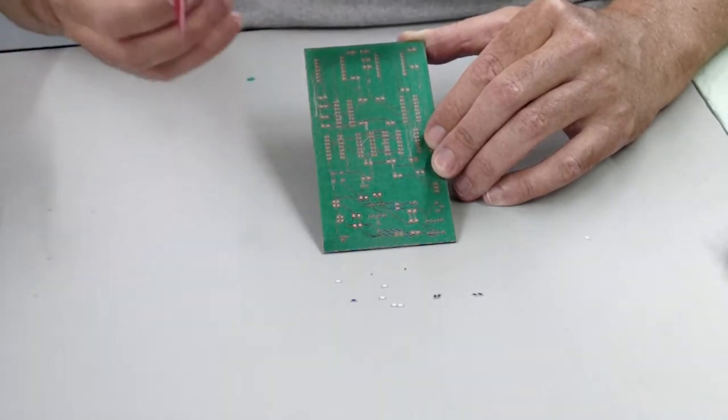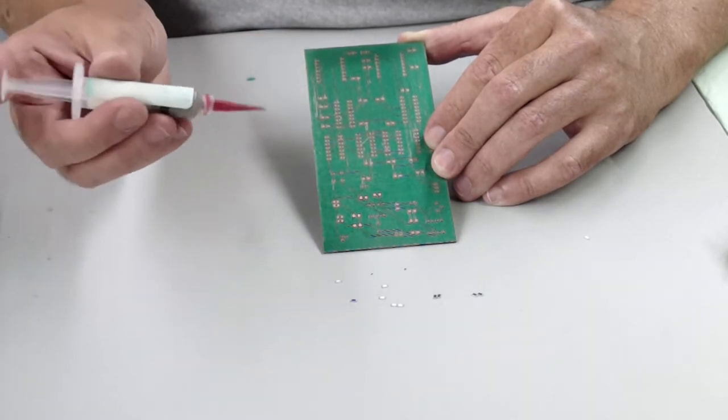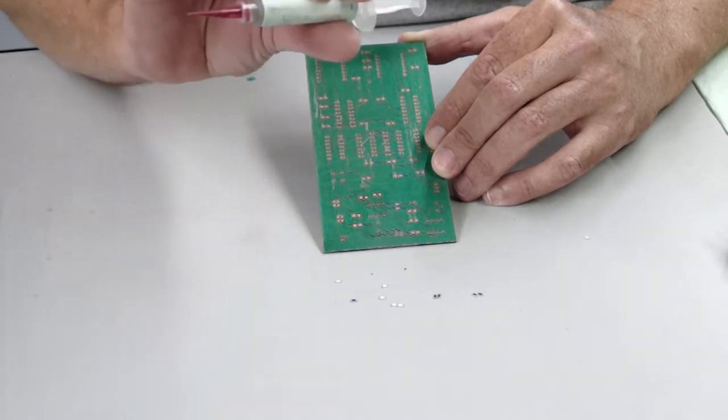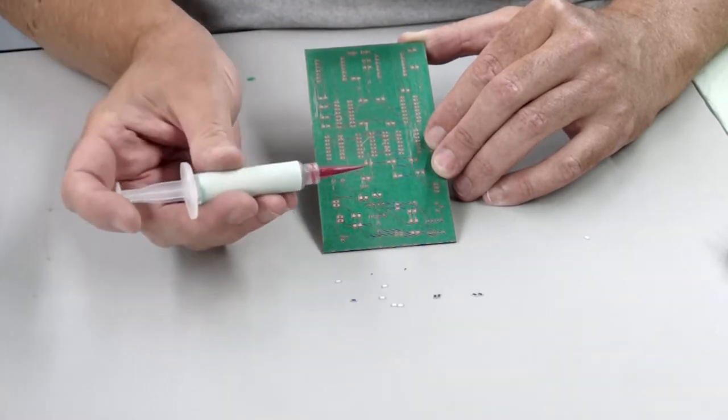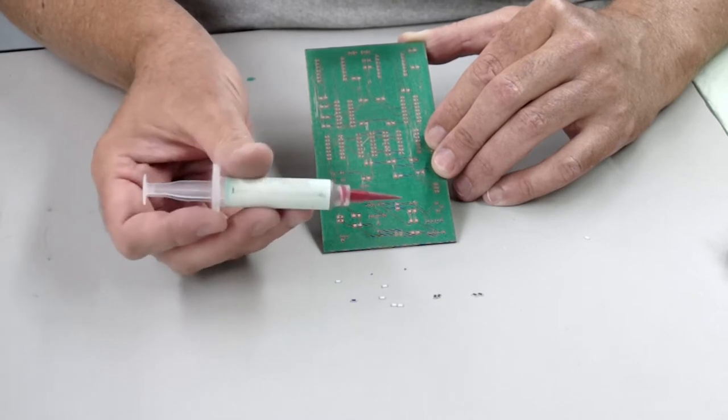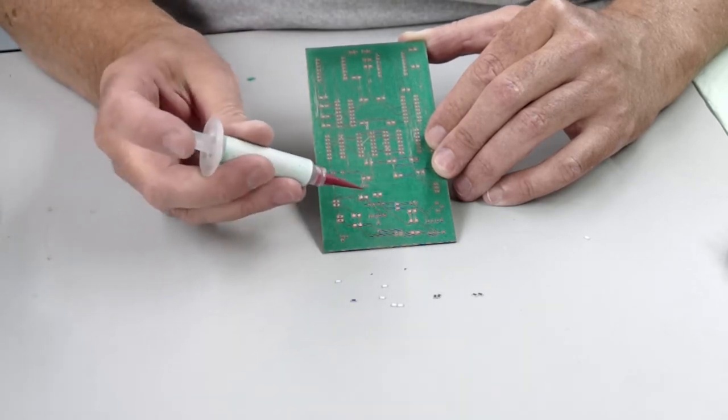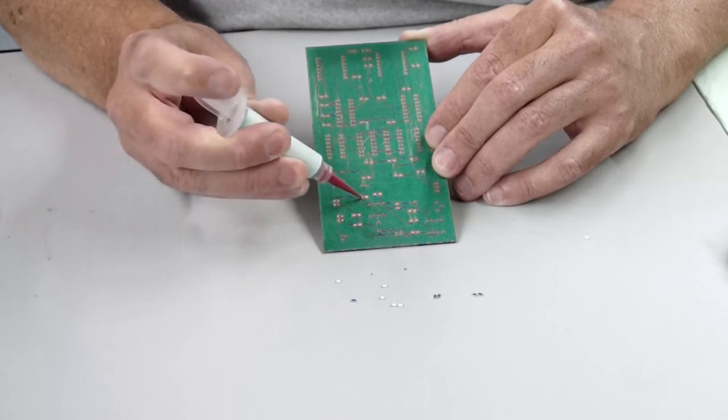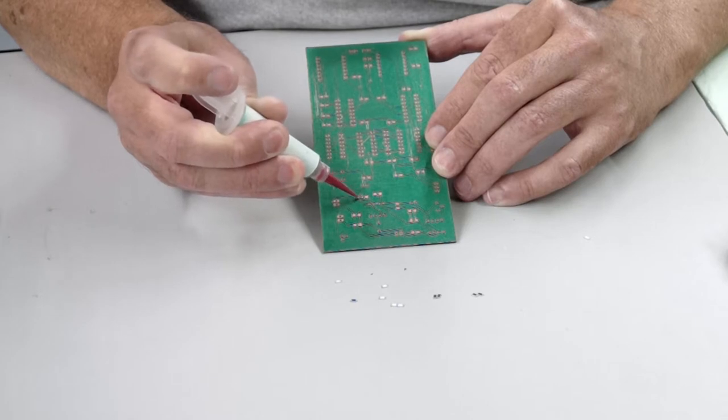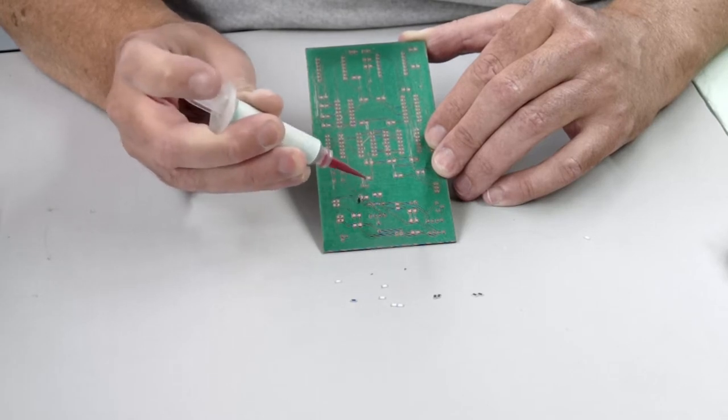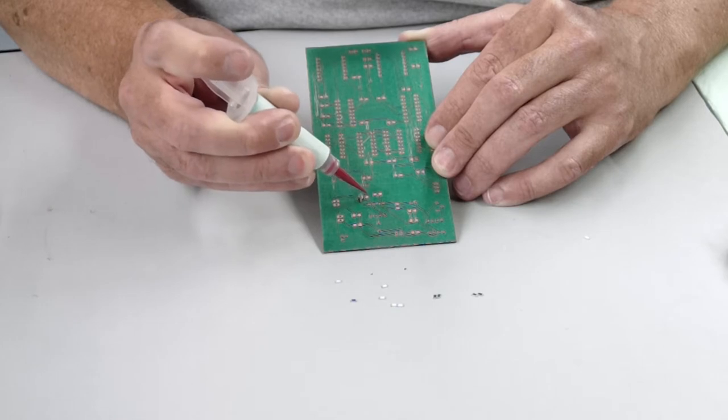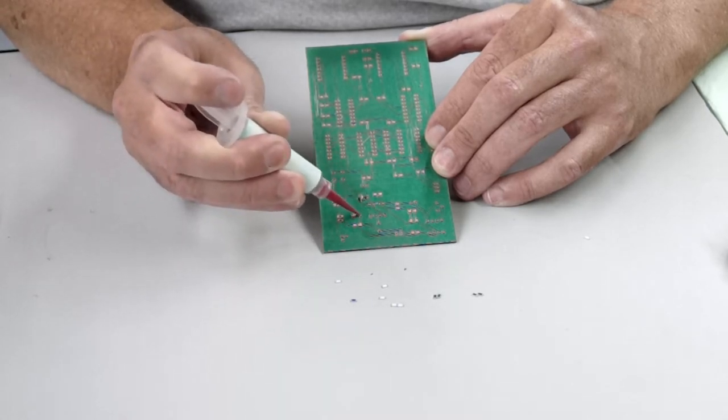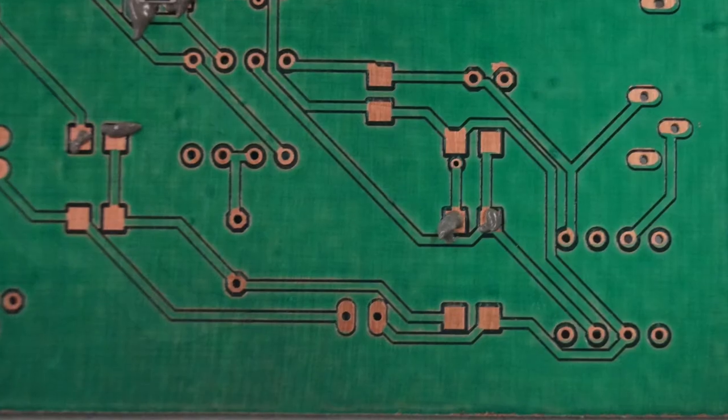Once I get them all fluxed, the next thing I want to do is apply my solder paste. We have solder paste available in a little syringe like this. I want to take my solder paste now, you notice it's got a little pointed tip, and I want to start putting just a dab of solder paste onto the pad. We just want a little dab on the pad.